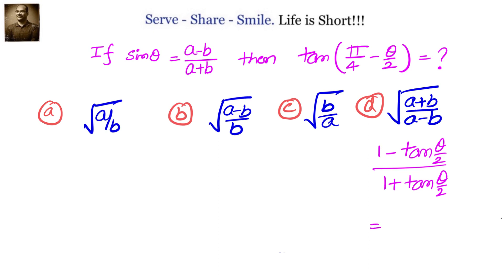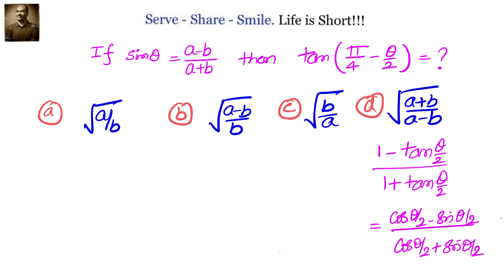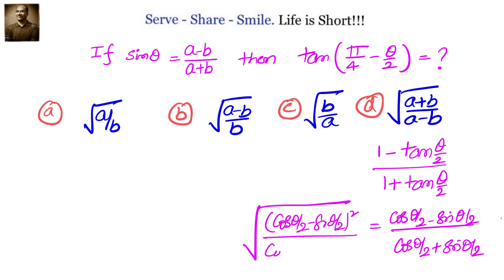Now, can we write tan(θ/2) as sin(θ/2) over cos(θ/2) and simplify? That gives us cos(θ/2) minus sin(θ/2), divided by cos(θ/2) plus sin(θ/2). We are currently in θ/2, but we want the expression in terms of θ, so let's square inside and take the square root: we get √[(cos(θ/2) minus sin(θ/2))² divided by (cos(θ/2) plus sin(θ/2))²].